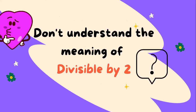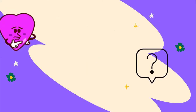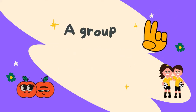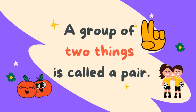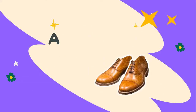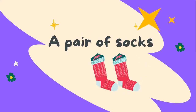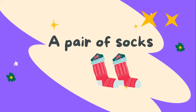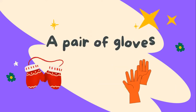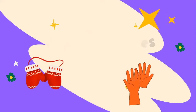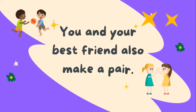Don't understand the meaning of divisible by two? For that, you first have to understand what is a pair. A group of two things is called a pair. For example, a pair of shoes, or a pair of socks, or a pair of gloves. You and your best friend also make a great pair.